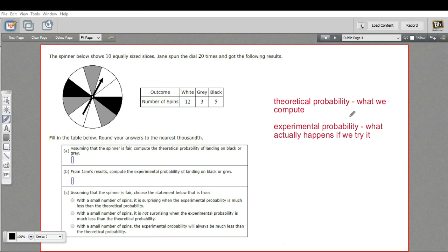Experimental probability is what happens if you actually try it in the real world, and they do not always match. In fact, usually they don't quite match.